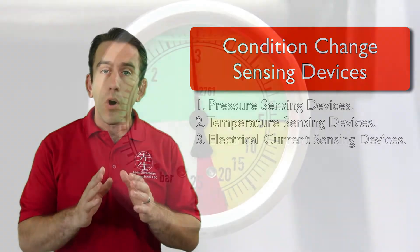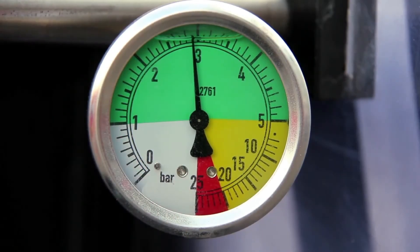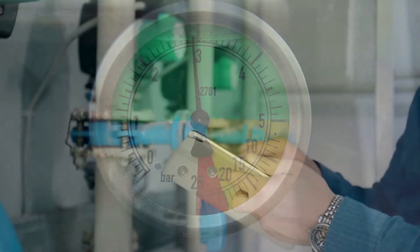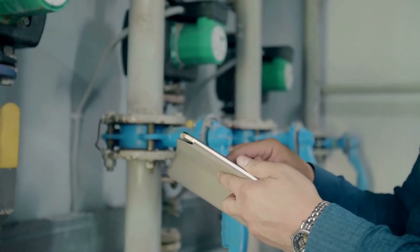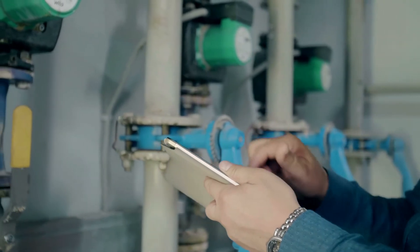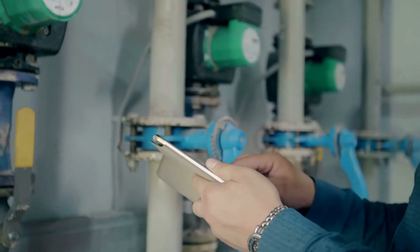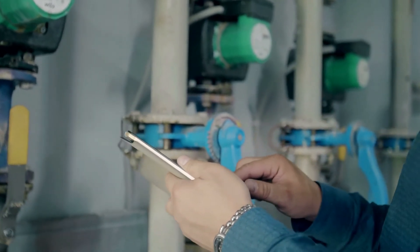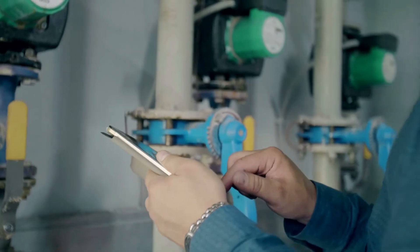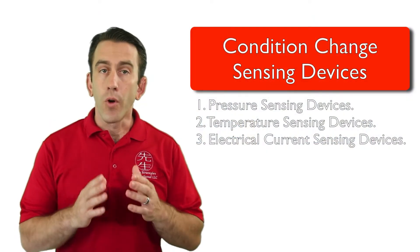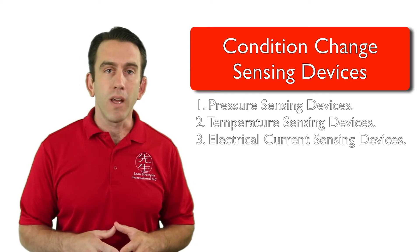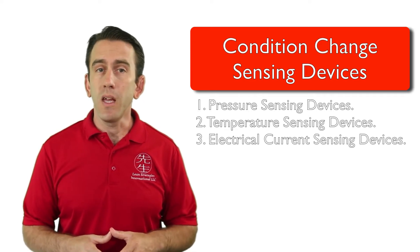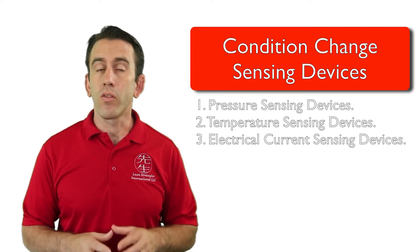Pressure sensing devices look for changes in pressure or errors in pressure. For example, if an air compressor needs a certain amount of pressure to operate correctly, the device would monitor this and warn a user or shut the machine down if an error occurs.